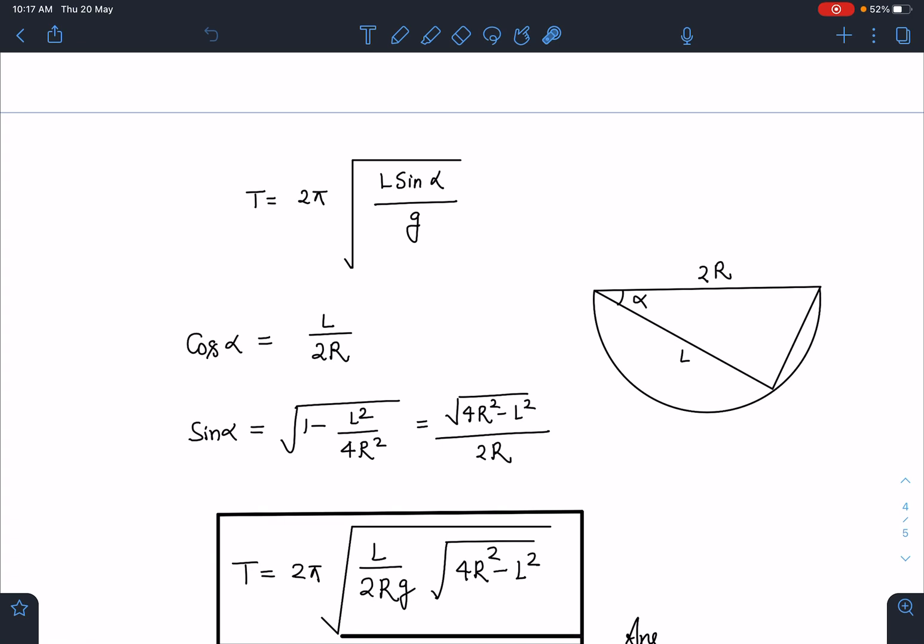In the semicircle, if any triangle is present, that triangle is going to be a right-angle triangle. From here we can see cos α = L/(2R).